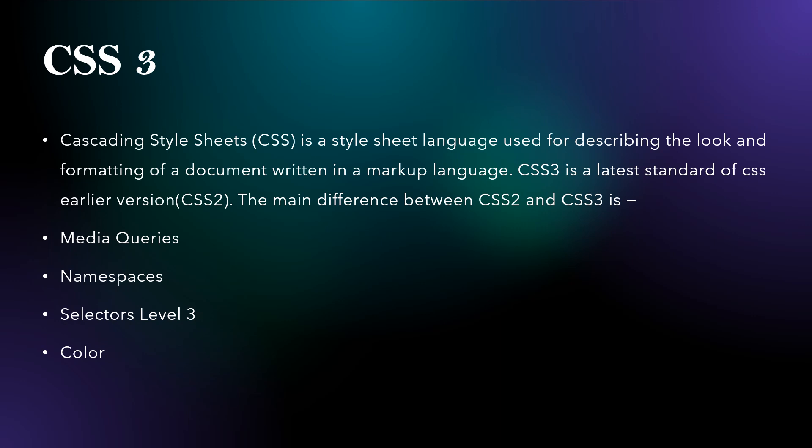CSS stands for Cascading Style Sheets. CSS3 is a style sheet language which helps us describe the look and format of a document written in a markup language. CSS3 is the latest standard of CSS. Its earlier version was CSS2. The main differences between CSS2 and CSS3 are media queries, namespaces, selectors level 3 and color.